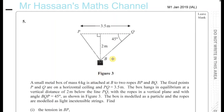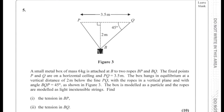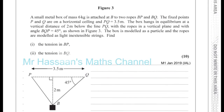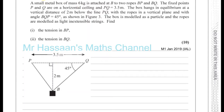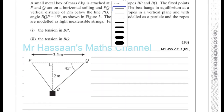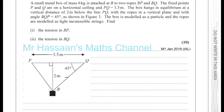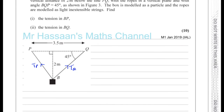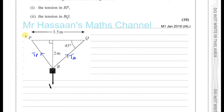We need to find the tension in BP and the tension in BQ. The ropes are modelled as light inextensible strings and the box as a particle. Looking at the diagram, I'll call the tension in the BQ rope TQ and the tension in the BP rope TP — these are two different strings connected to the particle. The weight of the particle acts straight down: 6 kilograms, so that's 6g newtons downward.